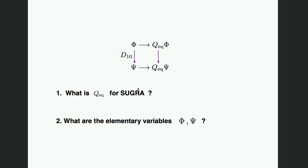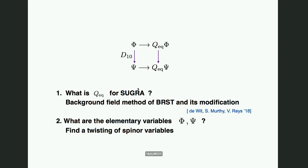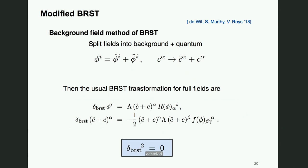So to restate our main questions: first, what is the Q-equivariant for gravity? For this we start from the background field method of BRST quantization and its modification. Second, what are the elementary variables phi and psi? To organize these variables, it is very useful to find the appropriate way of twisting. Twisting means we convert the spinor variables to scalars and vectors by projecting onto Killing spinors.